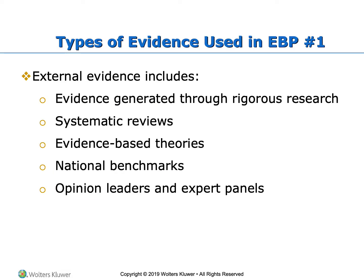One of the first pillars is the use of external evidence, which includes literature review. Different types of external evidence specifically include evidence generated through rigorous research, systematic reviews, evidence-based theories, national benchmarks, and opinion leaders and expert panels.